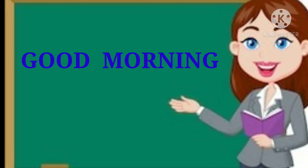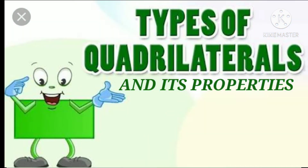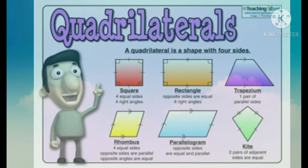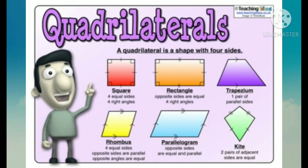Good morning students. In today's video I will explain you about different types of quadrilaterals and its properties. There are total six types of quadrilateral, namely square, rectangle, trapezium, rhombus, parallelogram and kite.